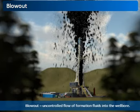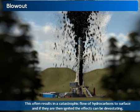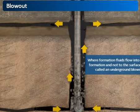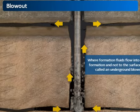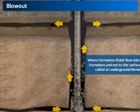The definition of a blowout is the uncontrolled flow of formation fluids into the wellbore. This often results in a catastrophic flow of hydrocarbons to surface, and if they are then ignited, the effects can be devastating. Where formation fluids flow into another formation and not to the surface, this is called an underground blowout. However, many underground blowouts will lead to a surface blowout.